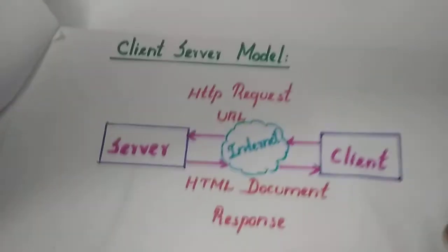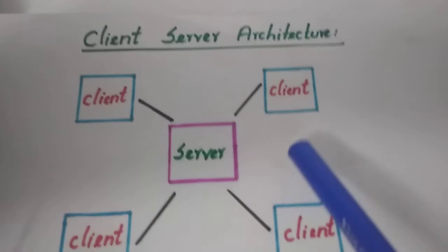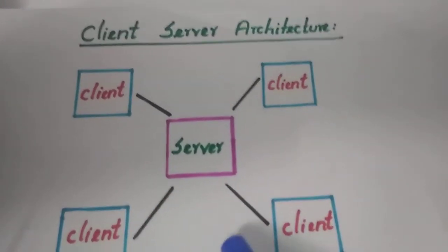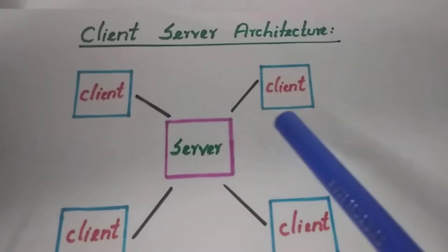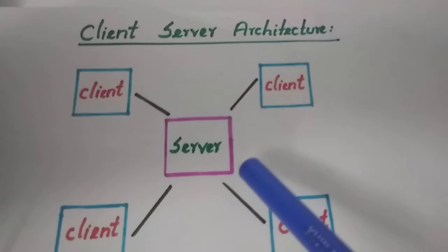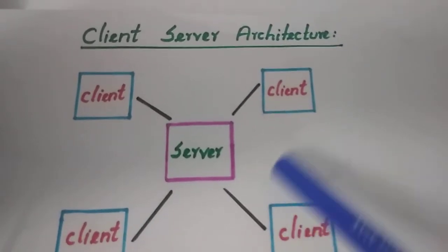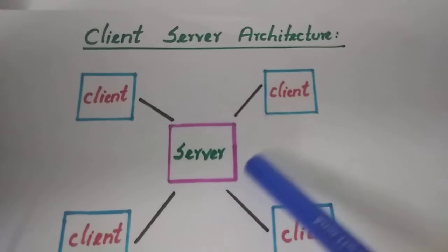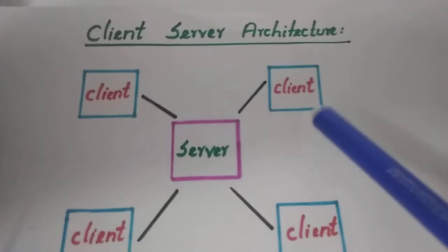That is all about the client-server model configuration. In this architecture, we have a centralized server which is receiving requests from more than one client. At a time, a server can accommodate only a limited number of requesters from the client system and the services are processed based on priority. When the client gives a request to the server, the server will authenticate the client before executing the process.